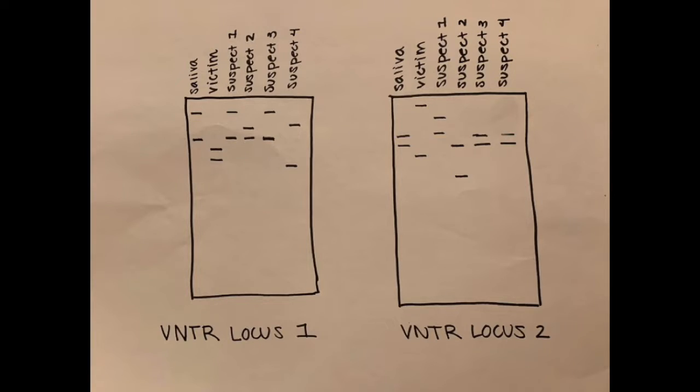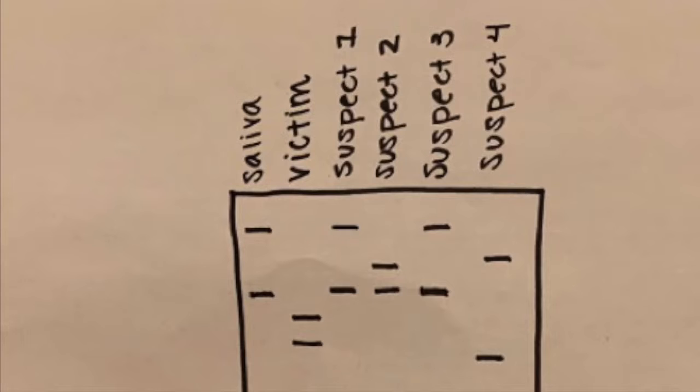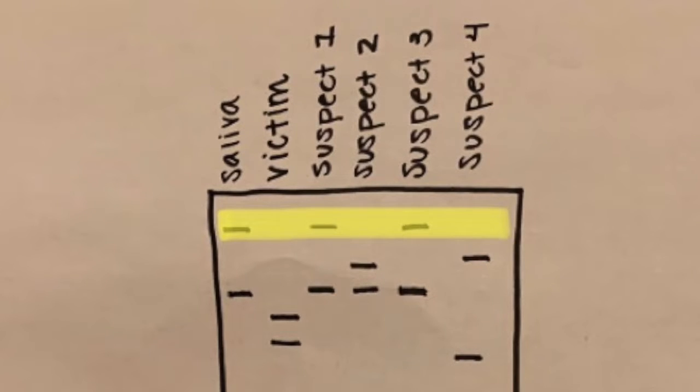Our two VNTR loci on two different gels. Locus 1 is on the right, and locus 2 is on the left. Let's start with the first locus. To compare DNA, we are going to compare the top band of saliva with everyone else's bands. As you can see, both Suspect 1 and Suspect 3 match with this band.